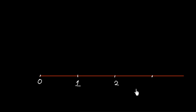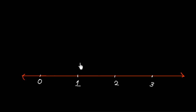Now we give names to these points. This is our 0, this is our 1, this is our 2 and 3, and so on. We have this number line here with 1 unit, 2 unit and 3 marked.